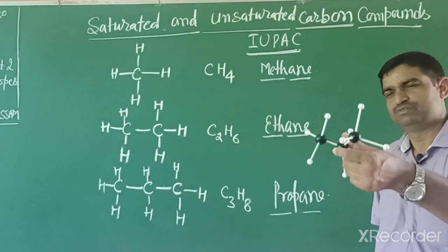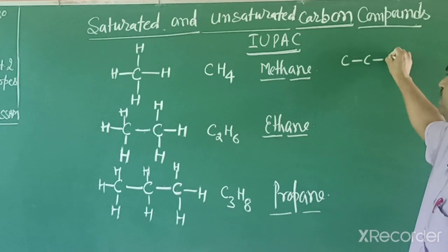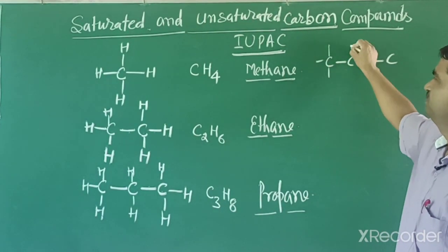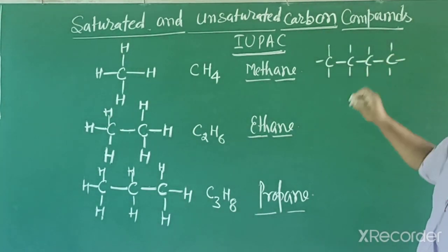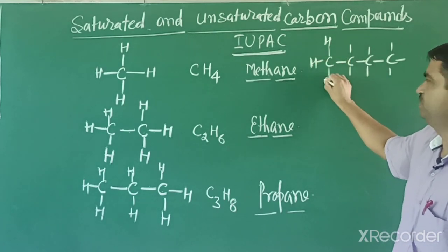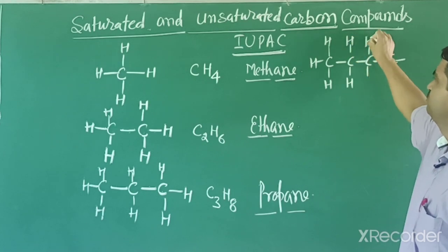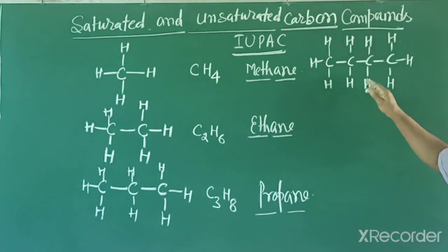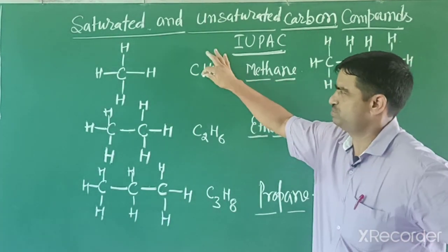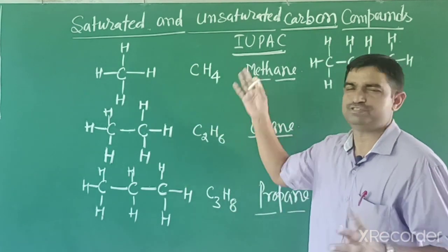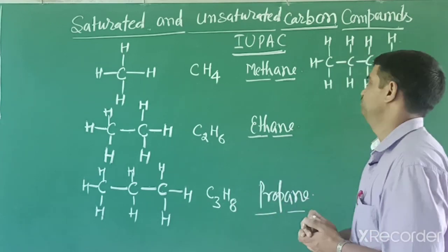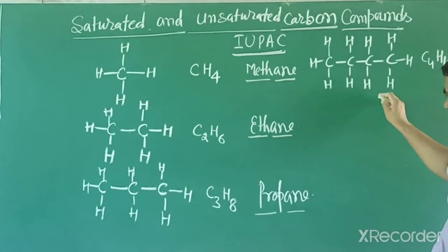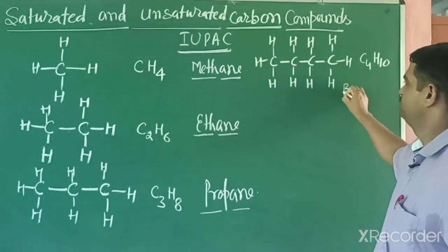When we write four carbons with all single bonds and complete the hydrogen, the formula is C4H10. Its name is butane. After that, five carbons gives pentane, six gives hexane. These are saturated hydrocarbons - carbon and hydrogen with only single bonds between carbon-carbon atoms. Hydrogen always makes single bonds.